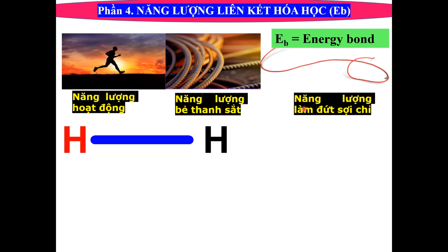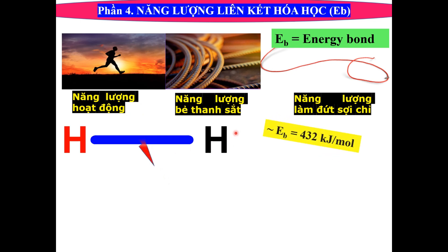Ví dụ trong hóa học thì chúng ta thấy ở đây, ví dụ như phân tử H2. Các em muốn bứt được cái liên kết này ra thì chúng ta cũng cần cấp một cái năng lượng nào đó để cho nó cắt đứt cái liên kết này ra. Liên kết hóa học giống như một cái cầu nối đầu này với đầu kia. Muốn cắt đứt cái liên kết để giải phóng từ một phân tử thành tất cả các nguyên tử, thì đối với hydrogen này chúng ta cần một cái năng lượng lớn đó là 432 kJ.